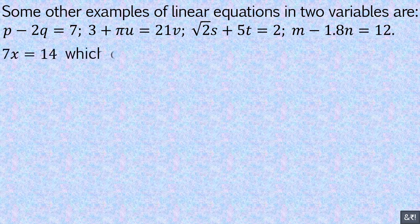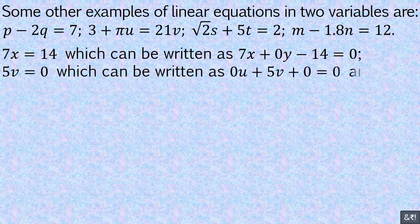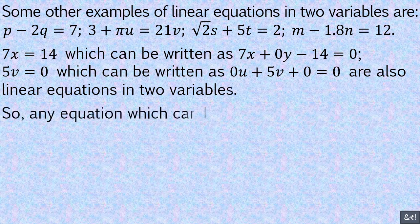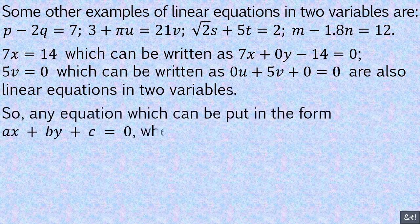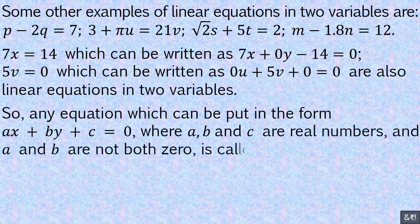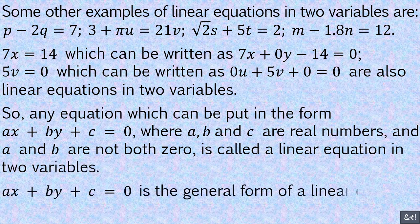7x equals 14 can be written as 7x plus 0y minus 14 equals 0. Similarly, 5v equals 0 can be written as 0u plus 5v plus 0 equals 0. These are also linear equations in two variables. So any equation which can be put in the form ax plus by plus c equals 0, where a, b, and c are real numbers and a and b are not both 0, is called a linear equation in two variables. ax plus by plus c equals 0 is the general form of a linear equation in two variables.